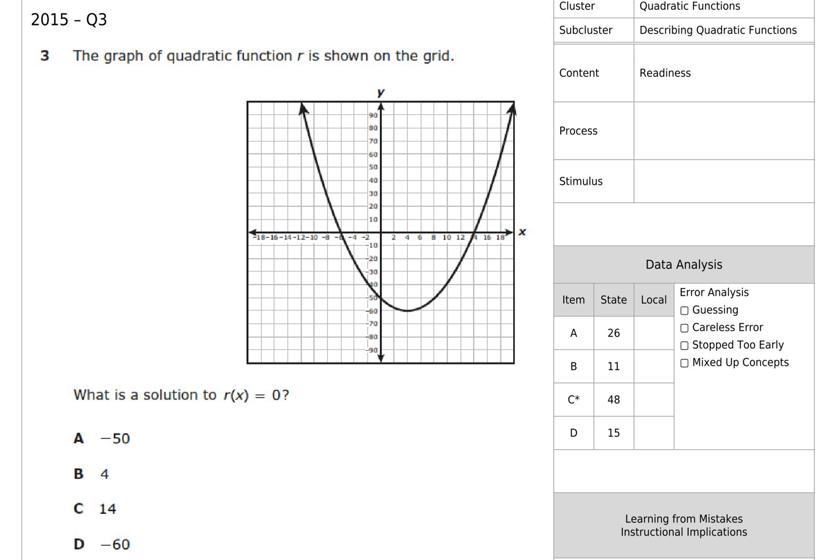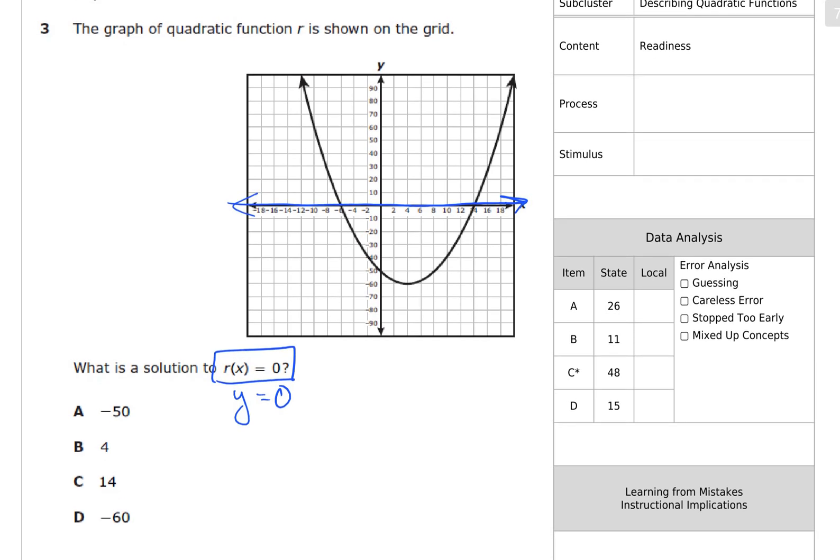What is a solution to R of x equals zero? Well, you know that R of x is the dependent variable, y. Y is equal to zero. So where is that line? That line is right here. That's just another way of asking what are these zeros, what are the x-intercepts? There's two of them. We have 14 and we have negative 6. So where do we see the answer? And the answer choice is C. Alright.